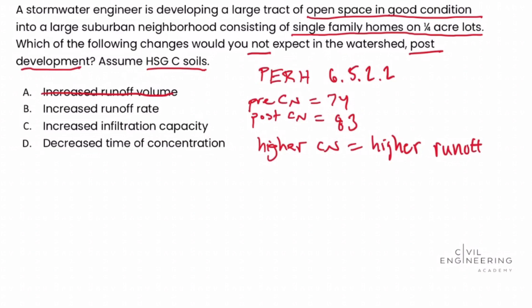Using the same process, answer choice B is an increased runoff rate. Again, we have higher runoff in the post-development watershed. Higher runoff is associated with an increased runoff rate, and since they're asking what we would not expect, we eliminate answer choice B.